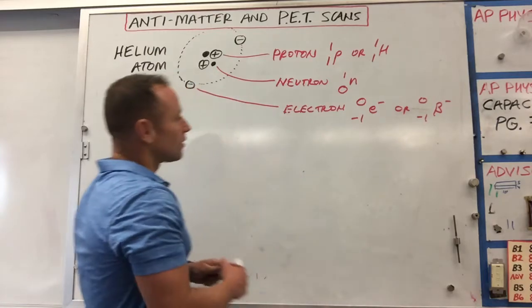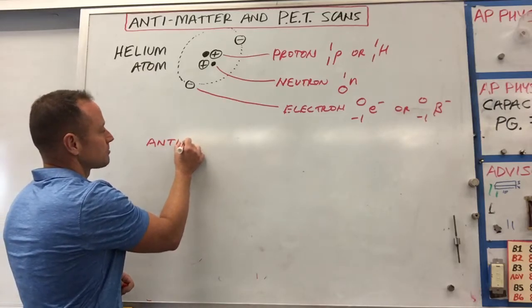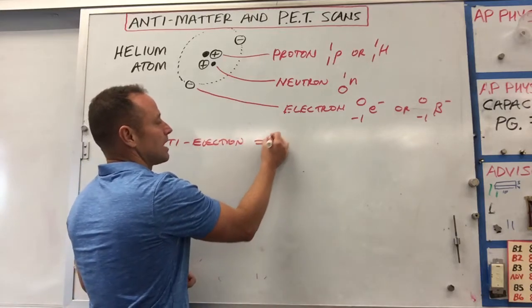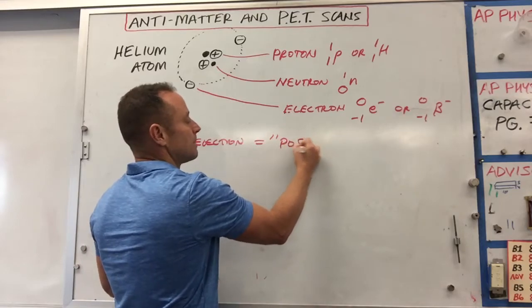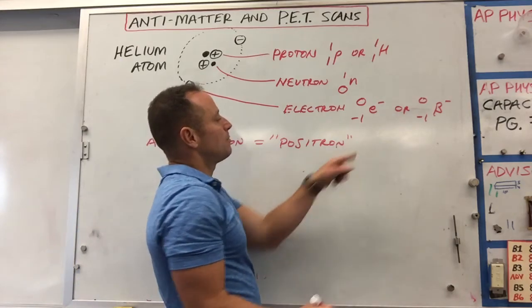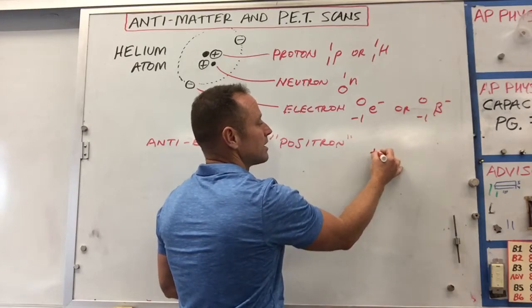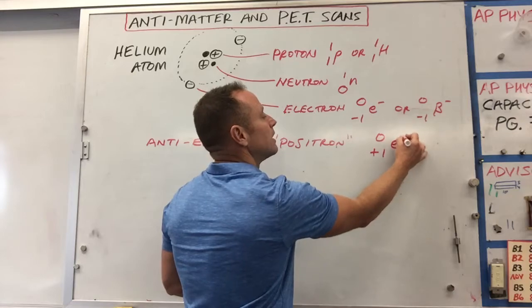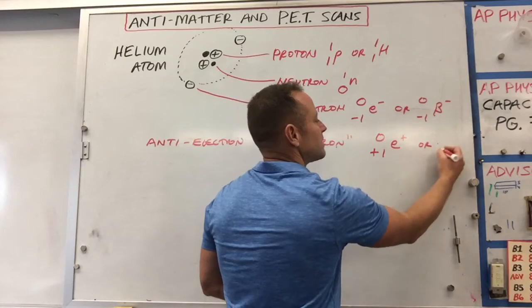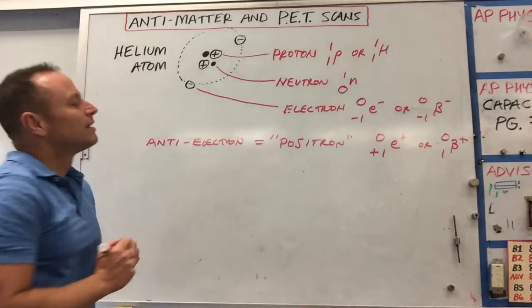And so the anti-particle for an electron, anti-electron, which actually has a special name of a positron since it was the first one to be found. So an anti-electron. But we're actually just always going to call it a positron. It has a special name because, again, it was the first one of these to be found. The way that you would write a positron, it's just like an electron, only it has a charge of plus one. So you can either just write the one or write plus one, zero, and then E plus, or you might see it as beta plus.